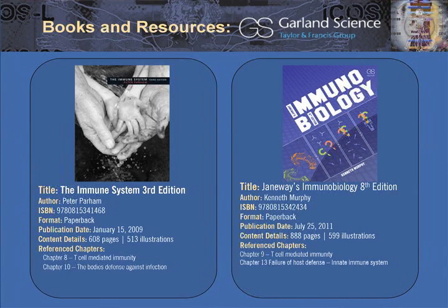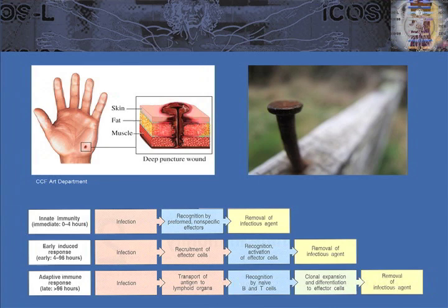Over the next few minutes, I'm going to explain to you how this occurs. As with all of our cases and lectures, we'll be using two textbooks by Garland Science: The Immune System by Peter Parham, and Janeway's Immunobiology. I've identified the highlighted chapters for you to follow along, particularly if you want greater detail.